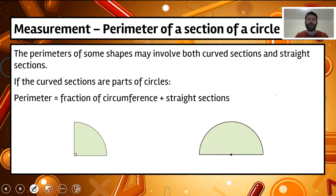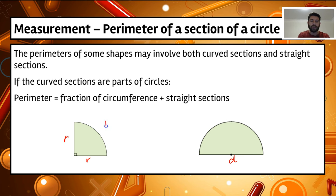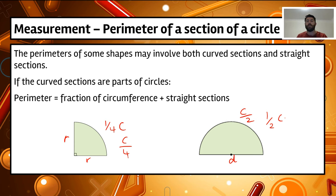What happens when we don't have a full circle? We can find the perimeter of shapes that have curved sections which are parts of circles. We need to work out what fraction of the circumference that arc represents, then add any straight sections. For a quarter circle, the curved part is C divided by 4. For a semicircle, it's C divided by 2, which is half the circumference. We then add that fraction of the circumference to the straight sections to get the total perimeter.